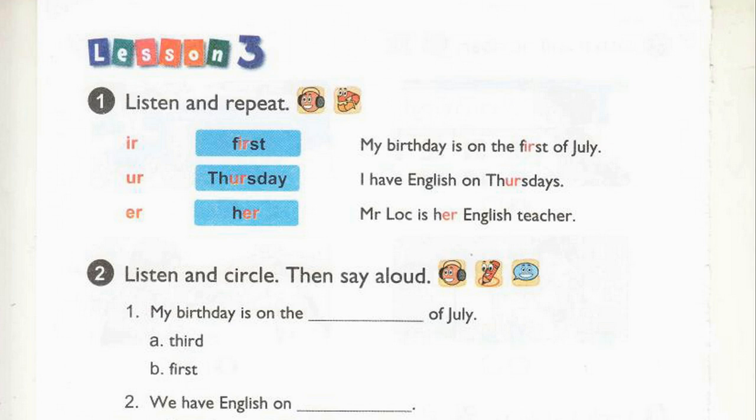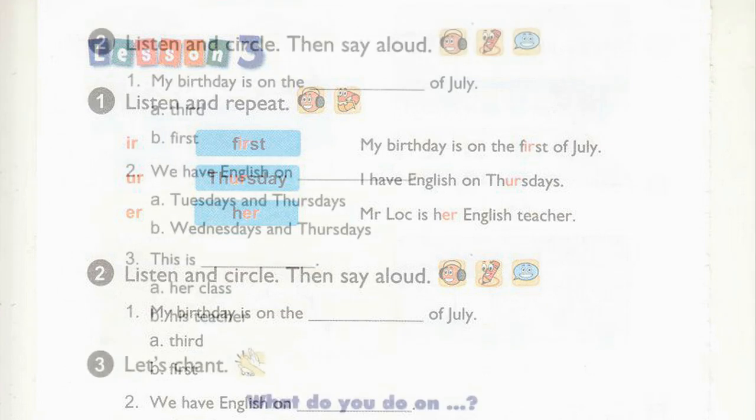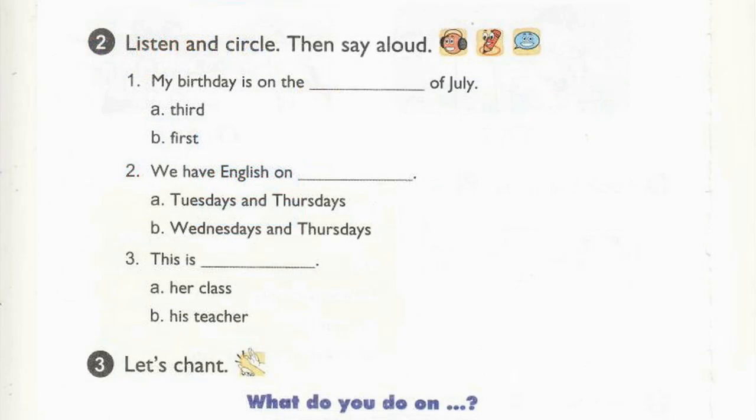Page 22. Activity 2. Listen and circle. Then say aloud. 1. My birthday is on the 1st of July. 2. We have English on Wednesdays and Thursdays. 3. This is her class.